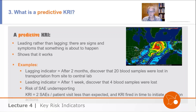Here are some examples. First, the difference between a lagging and a leading indicator. A lagging indicator: after two months we discover that 20 blood samples were lost in transportation — a significant problem. A leading indicator: measuring after just one week, we discover four blood samples are lost. That earlier signal hopefully allows us to intervene and avoid the 20 samples being lost.